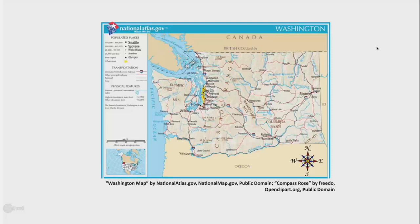A map shows land and water. A map usually has a key. The key uses symbols to show places on the map.